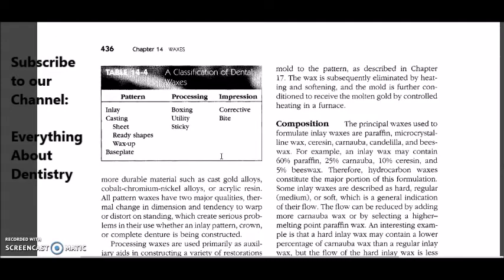Let me elaborate a little bit. Sheet waxes, ready shape and wax up. Casting waxes may be dispensed. You may get these waxes in the form of sheets, or they may be ready-made shapes available of the different types of appliances you want to fabricate. For example, they may come in the shape of clasps.